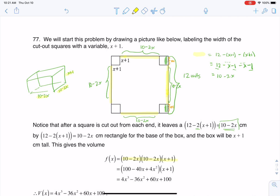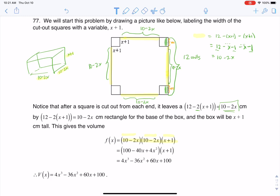Length times width times height and then it's a matter of multiplying all of that out using all sorts of distribution rules. So the first thing I did was I distributed the 10 minus 2x to the 10 minus 2x and then how I get from here to here is I distribute some more.